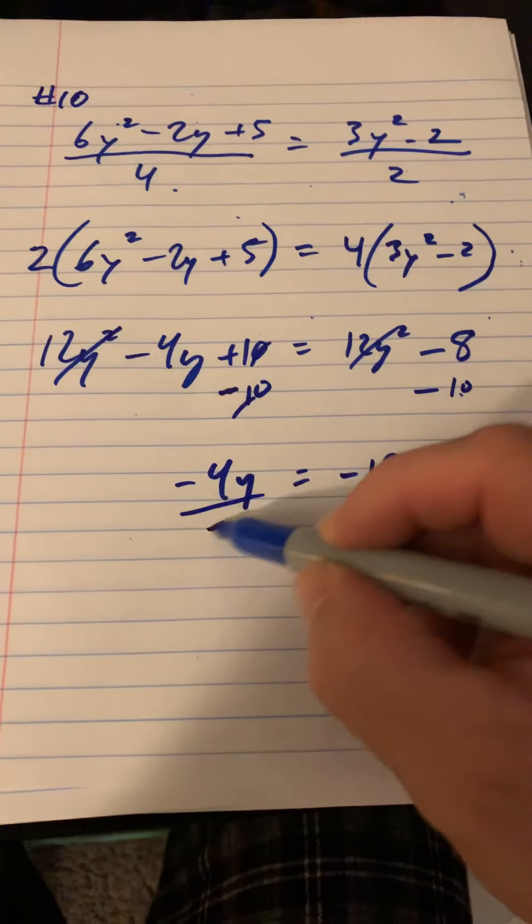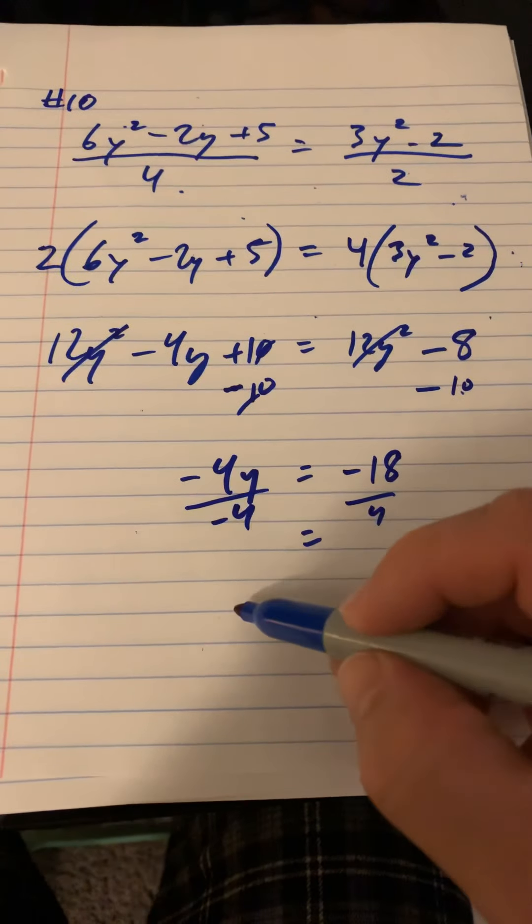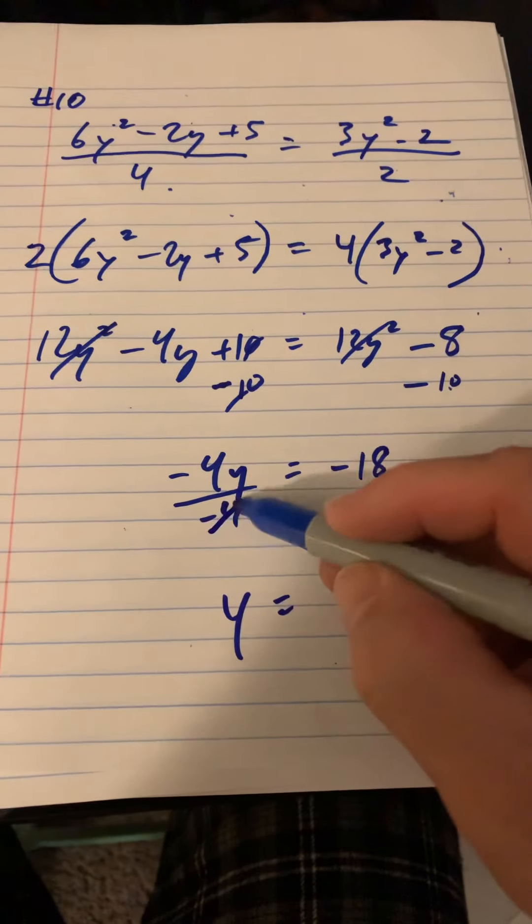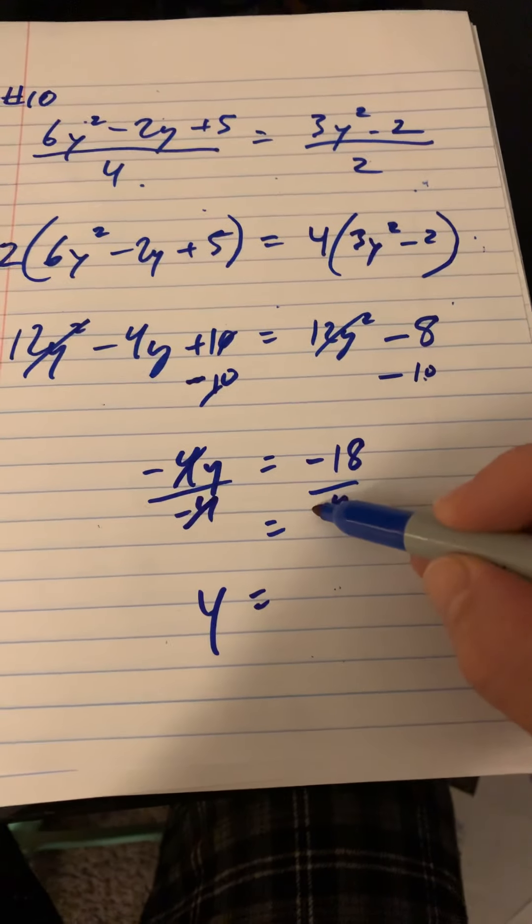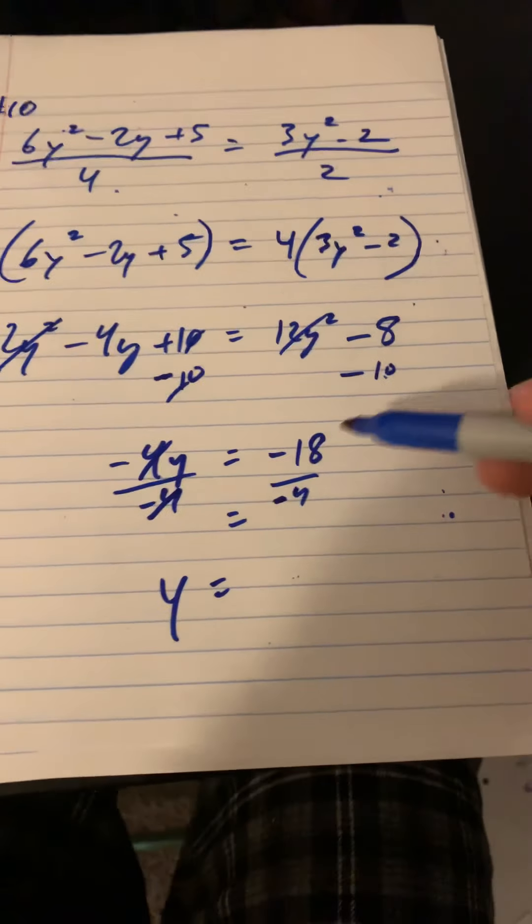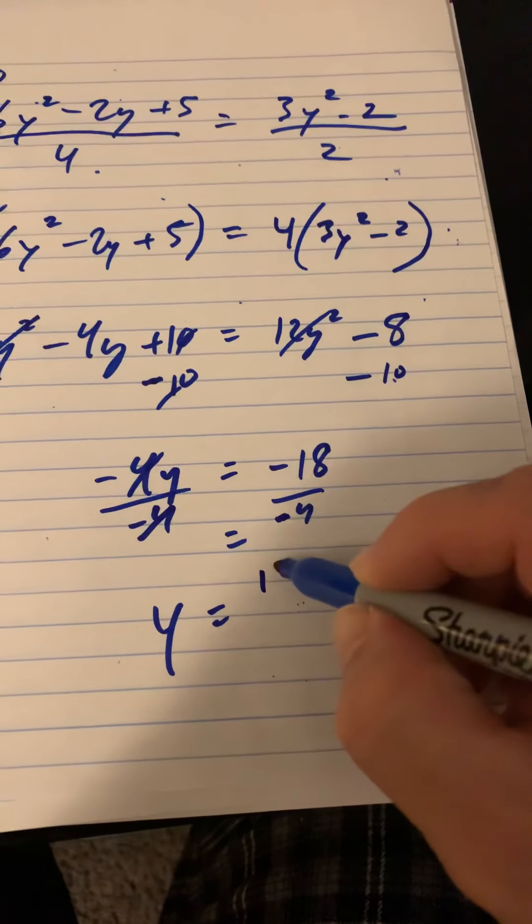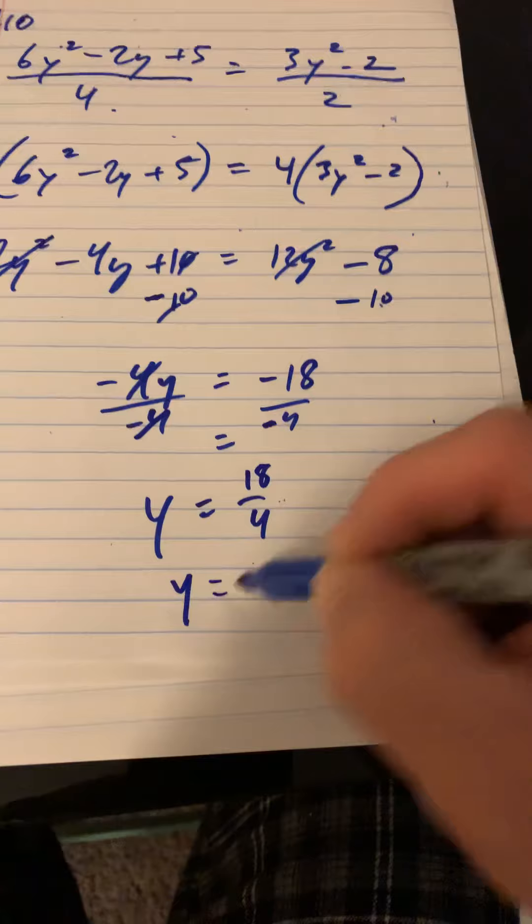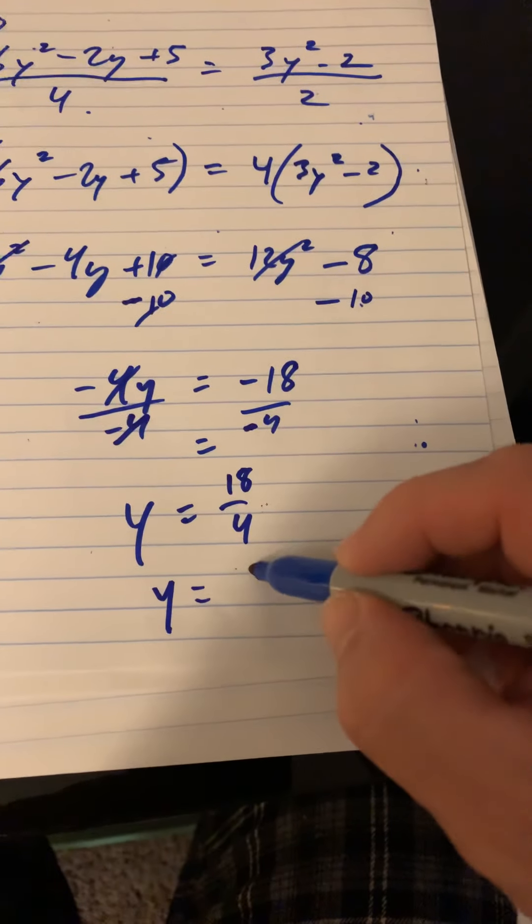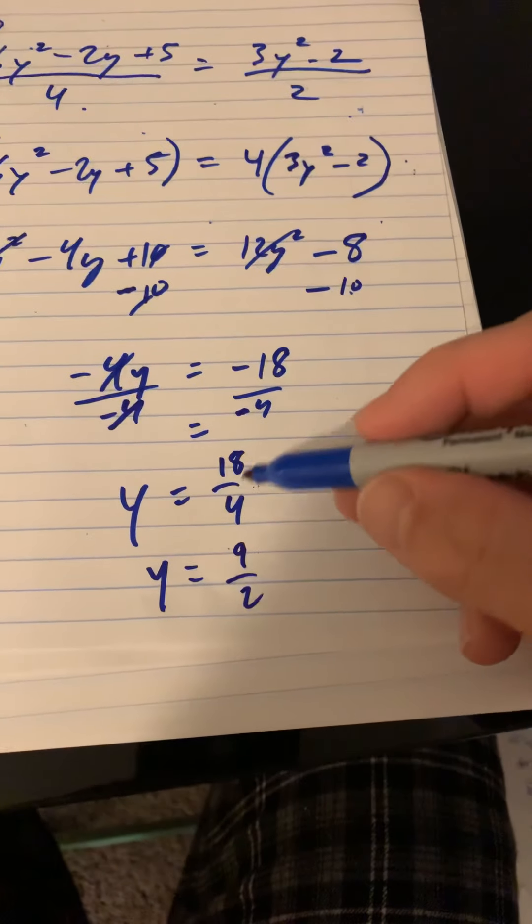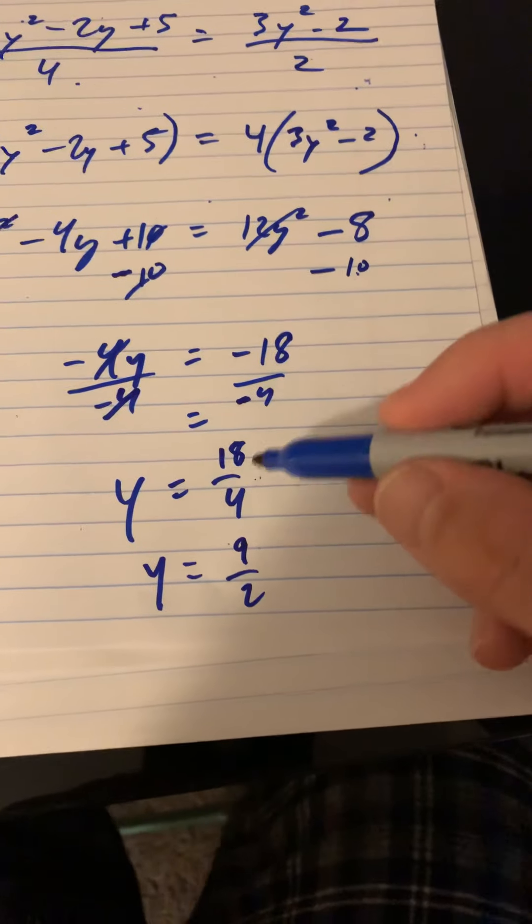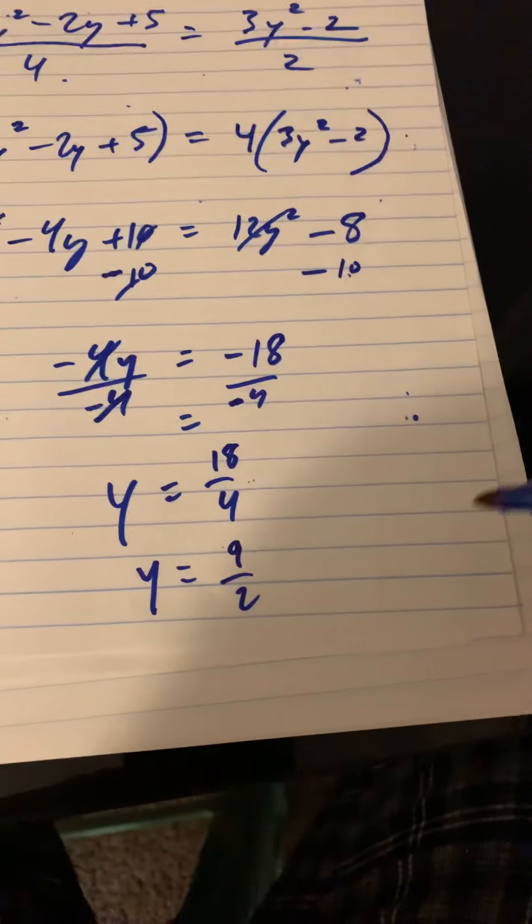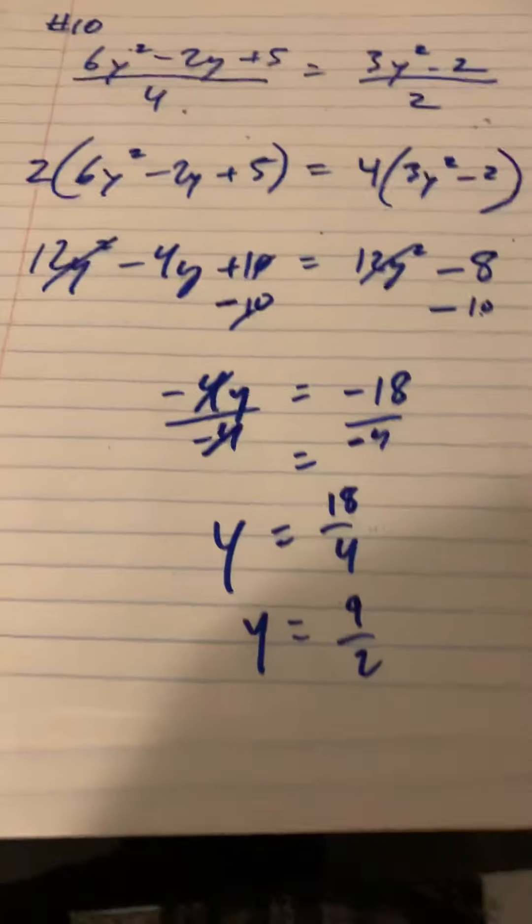We divide both sides by negative 4 and you get y equals 9 over 2. Divide numerator and denominator by 2 and you get 9 over 2.